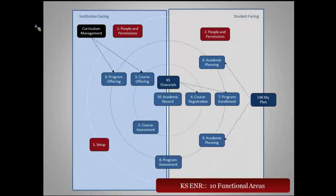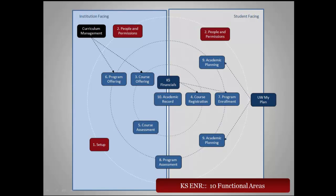If you recall this somewhat complicated graphic of enrollment and how we're thinking about it from a functional framework — we really have ten areas of functionality. This slide is meant to ground you again in those ten functional areas and give you a sense of what we're covering today. We're really concerned with this outer loop of the big stuff you have to do to get the system set up before you can actually do the more interesting stuff of offering courses and programs and getting students in and out of them.